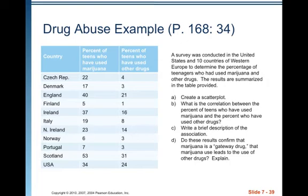A survey was conducted in the United States and 10 countries of Western Europe — so 11 individuals involved, the different countries — to determine the percentage of teenagers who had used marijuana and other drugs. The results are summarized in the table. For example, the Czech Republic: 22% of teens have used marijuana and 4% have used other drugs. Scotland: 53% have tried marijuana and 31% have tried other drugs. The USA is somewhere in the middle, with 34% having tried marijuana and 24% having tried other drugs. Order is very important — make sure when you enter the data that the ordered pairs are correct for each country.